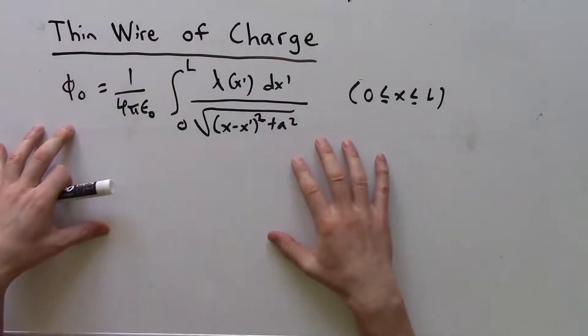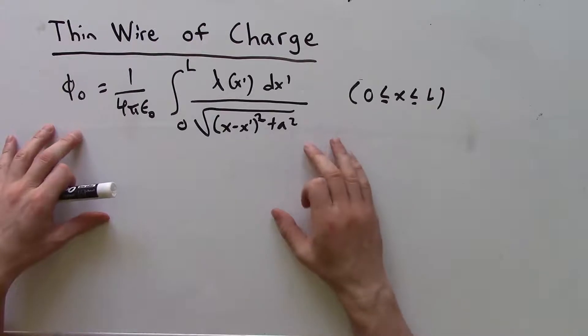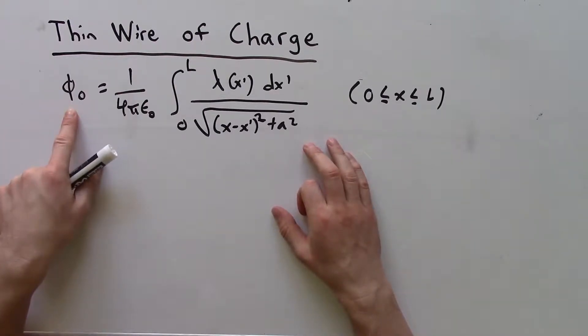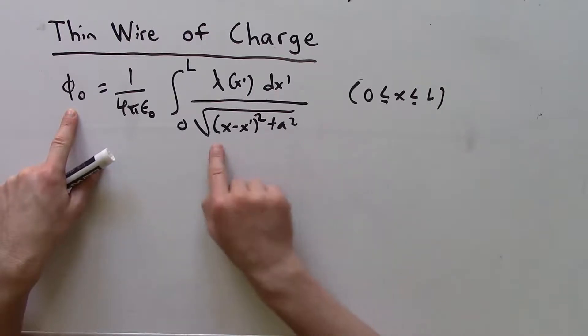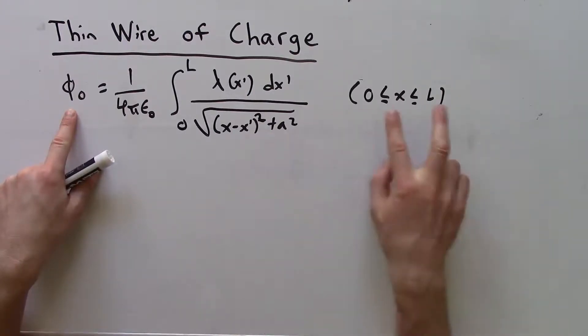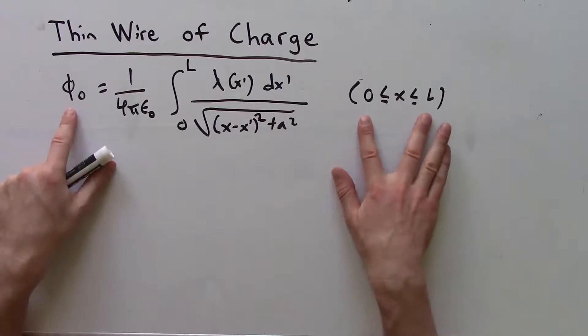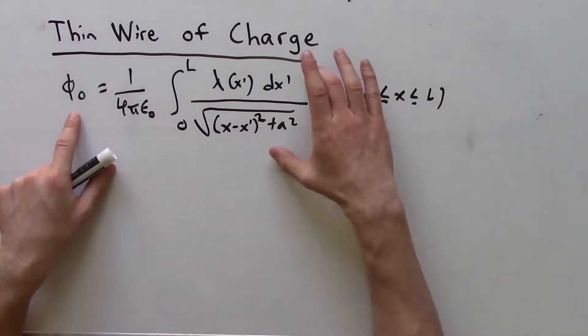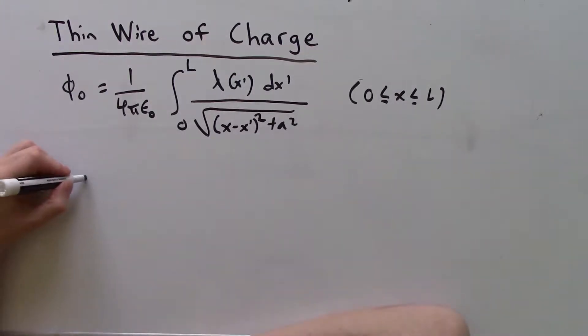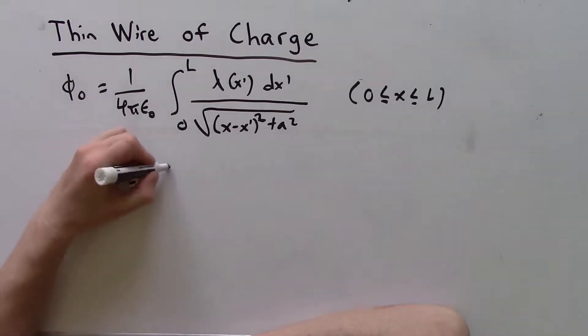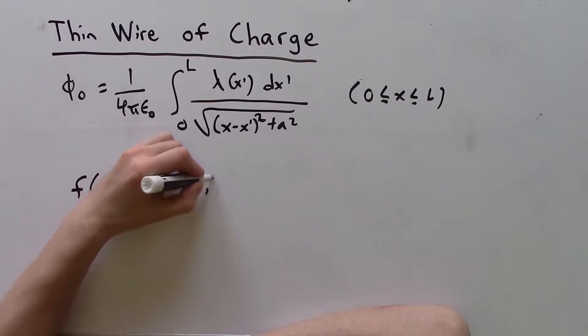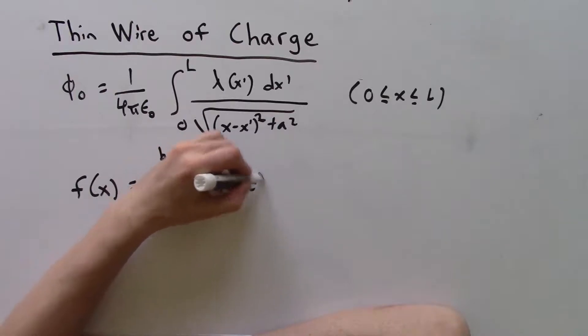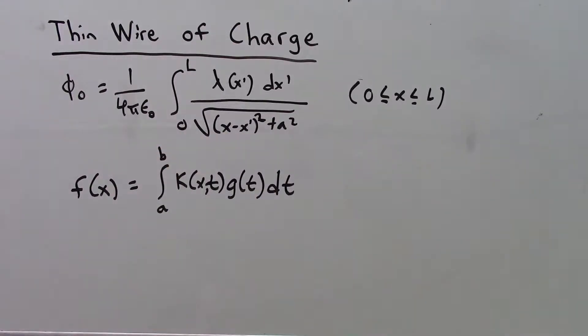I've rewritten our Coulomb's Law expression for that thin wire of charge. My scalar potential is a constant value for all values of x at distance a from the wire, provided I'm within the limits. This expression is very special. It fits a template that looks like f(x) equals the integral of k(x,t) g(t) dt. This is very special. It is called a Fredholm equation of the first kind.